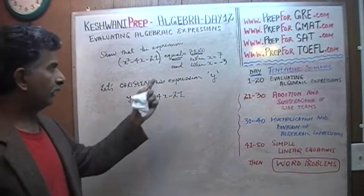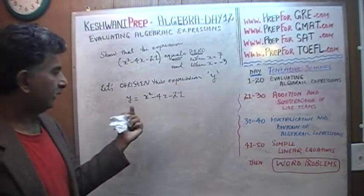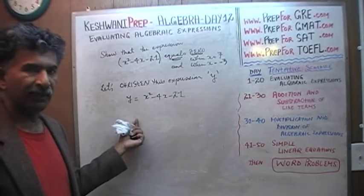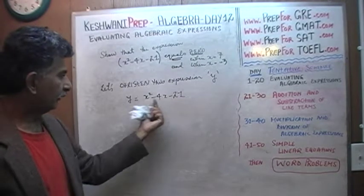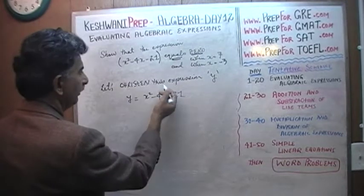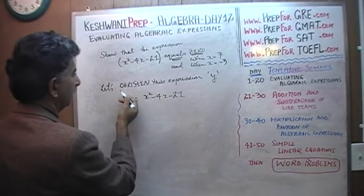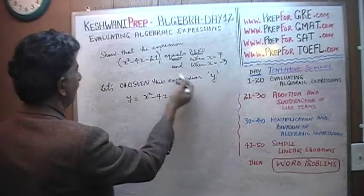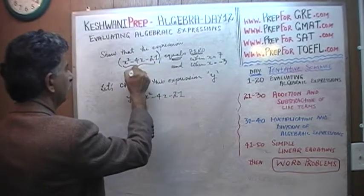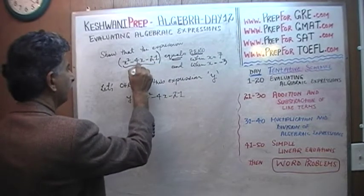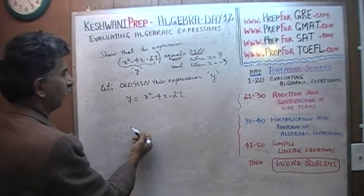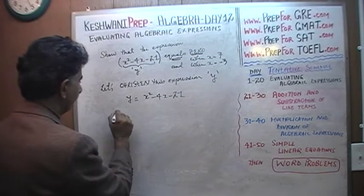All of this work that I'm doing right now is not necessary at all in order to show the answer. I'm doing this so that you get used to the language of algebra — this is how it's going to be written. Now because we have called this expression y, we are giving it the name y. So y equals this, and what we are asked to find is the value of the expression y when x equals 7.